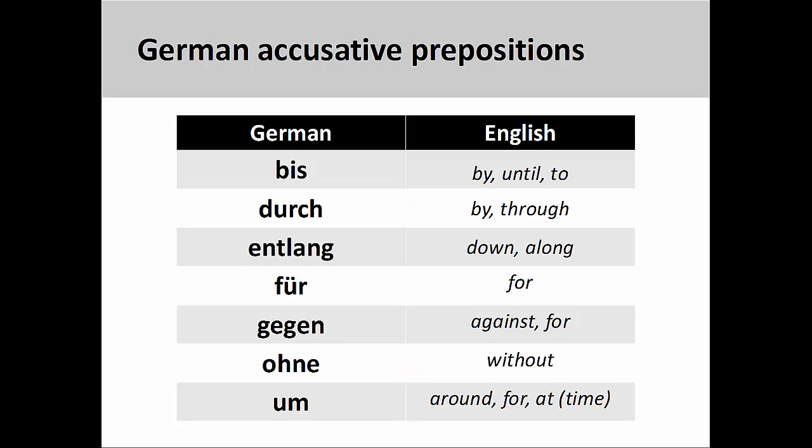There are seven accusative prepositions in German: bis (until/to), durch (through), entlang (down/along), für (for), gegen (against), ohne (without), and um (around; for; at a point in time).